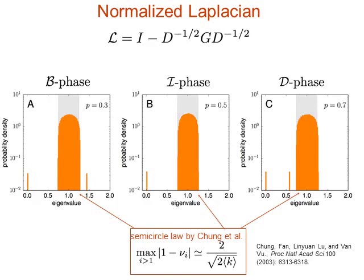In the coupled phase, the second smallest eigenvalue is outside the spectrum. The bulk of the spectrum can be predicted using Chung's semi-circle law: all eigenvalues except the trivial zero one lie within a radius of 2/√(average degree) around 1. The key question is: as P varies, when does the outlier eigenvalue get absorbed back into the spectrum? That point marks the transition between phases.